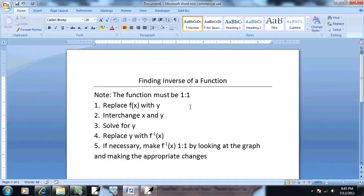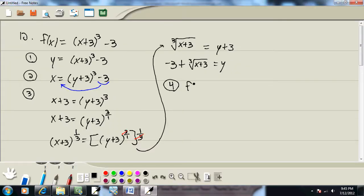Step 4, replace your y with your inverse notation. So, we've got negative 3 plus the cube root of x plus 3. And then I might have put the negative 3 after that. Now, this is already 1 to 1, so we don't have to do step 5. And that would be our answer.